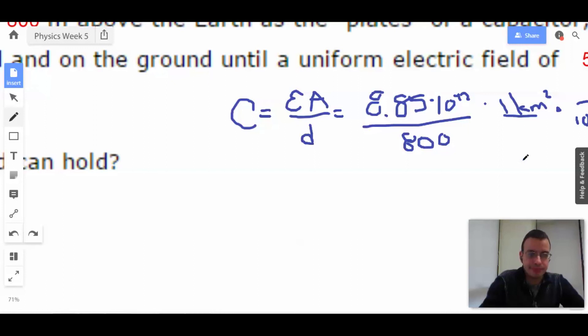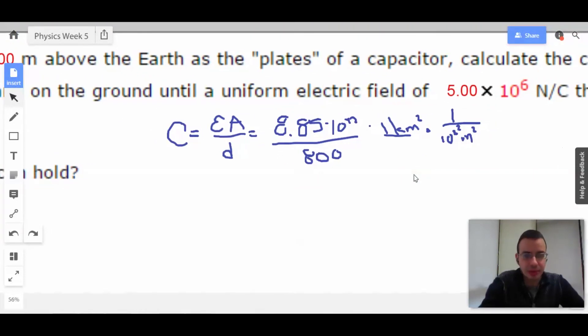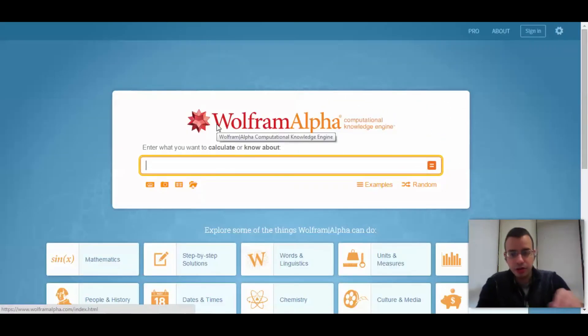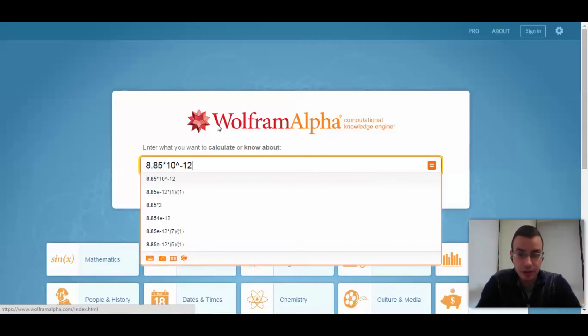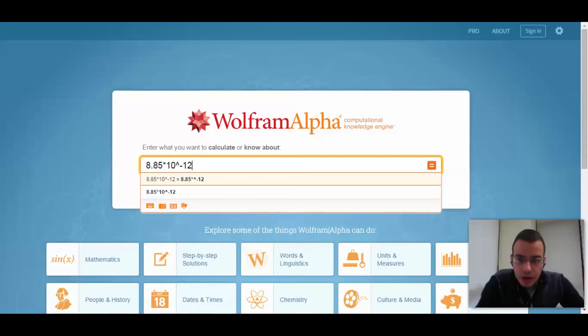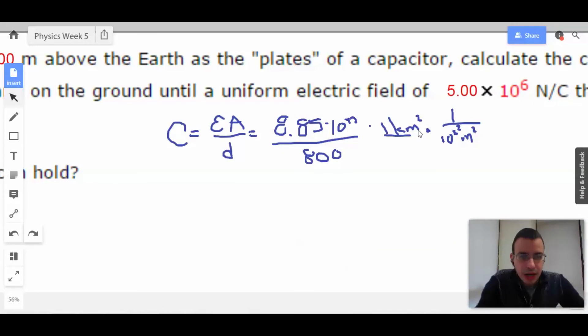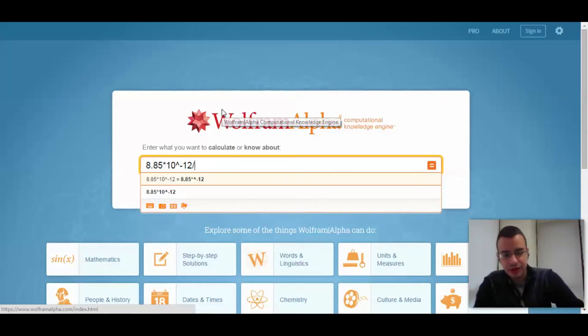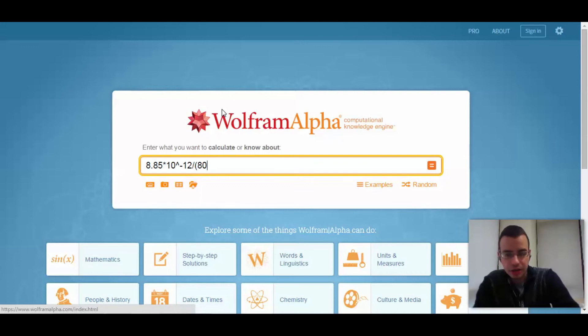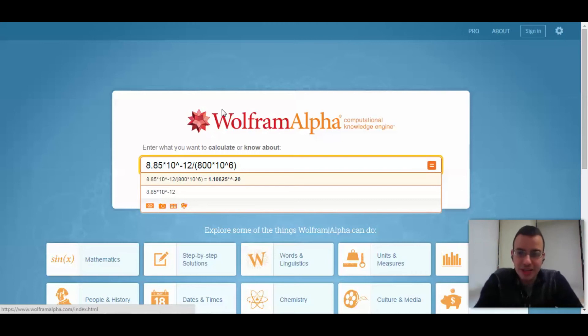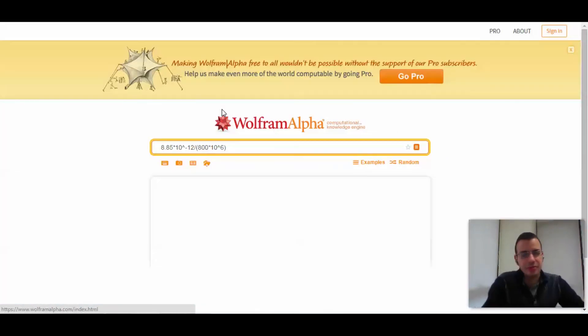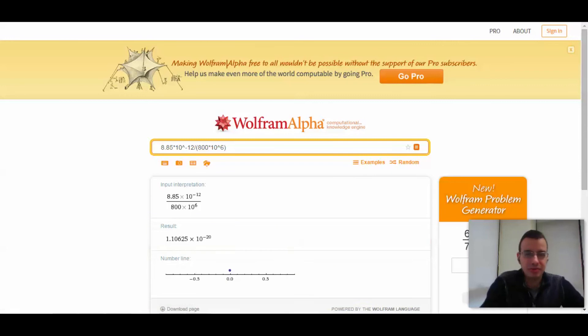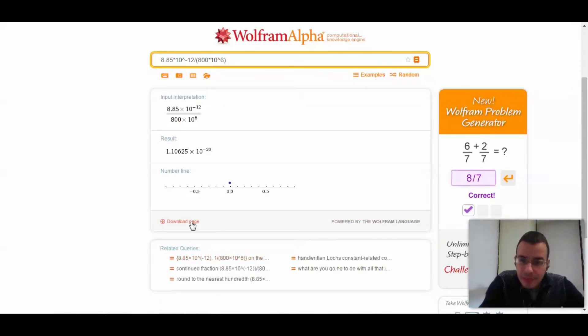So the only tricky part is going to be the 10 to the sixth. So 8.85 times 10 to the negative 12th times 1 square kilometer divided by 800. We've got the 10 to the sixth because we're converting kilometers squared to meters squared. Man, is that a million square meters in a kilometer? That's a lot. Hmm, that seems like an awfully small capacitance.